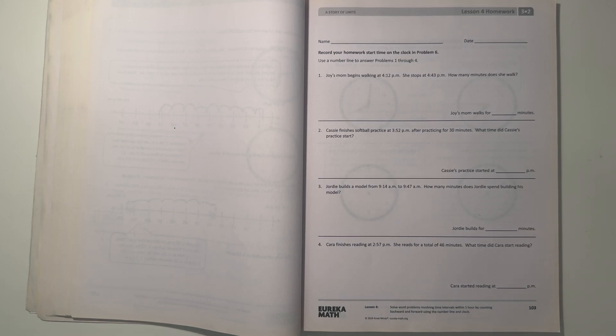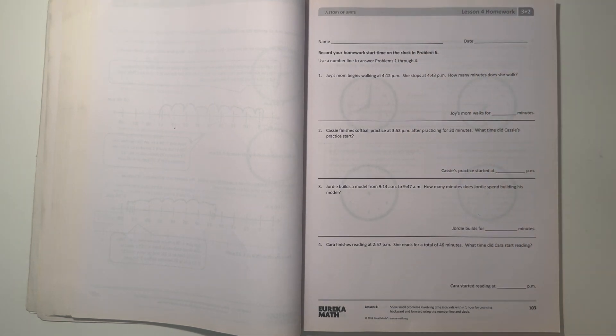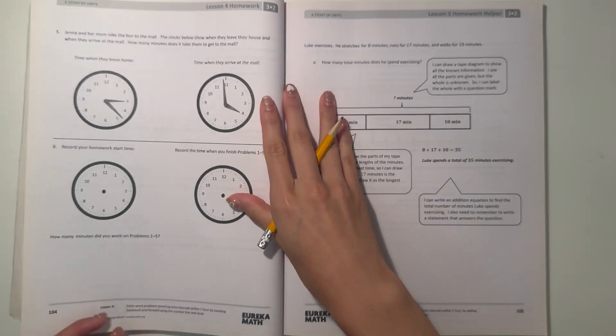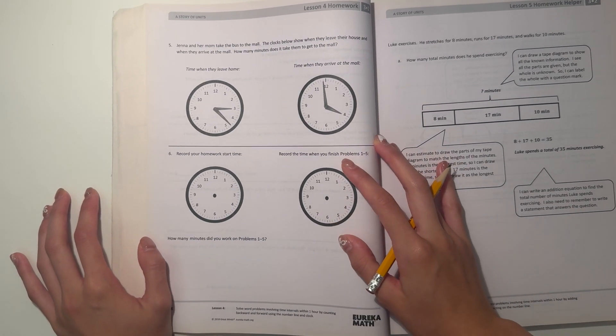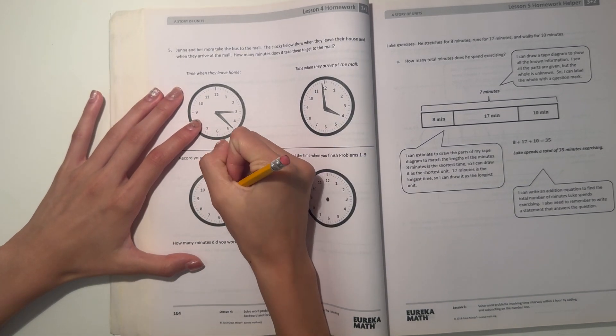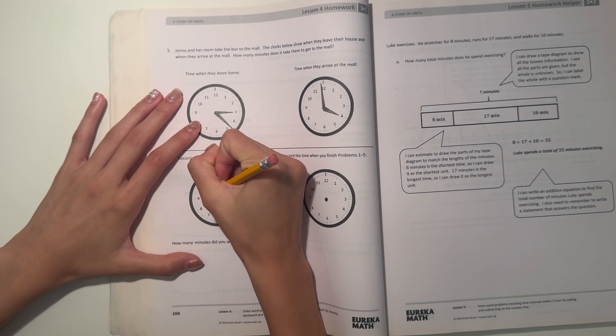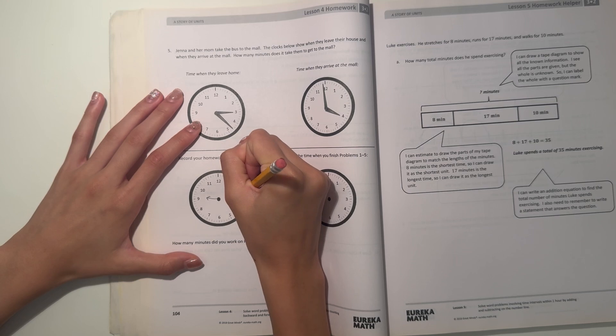Hey guys, are we here today I'm doing the Eureka Math Grade 3 Module 2 Lesson 4 homework, so let's get started. First it says record your homework start time on the clock and problem six. Right now for me it's like 9:14, so I'll do 9:14. That'd be 5, 10, 15, so that'd be like here.